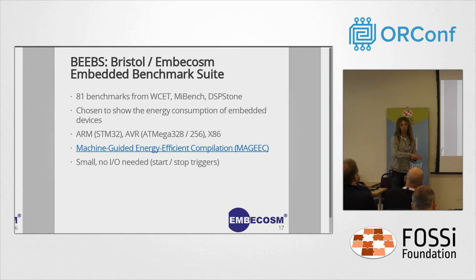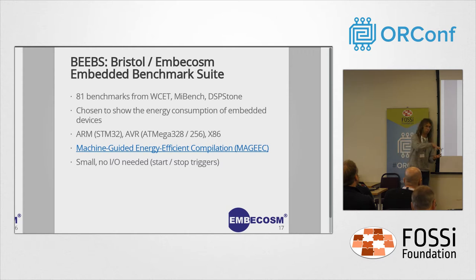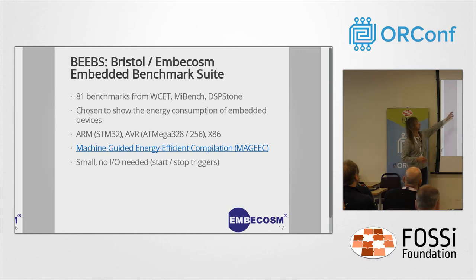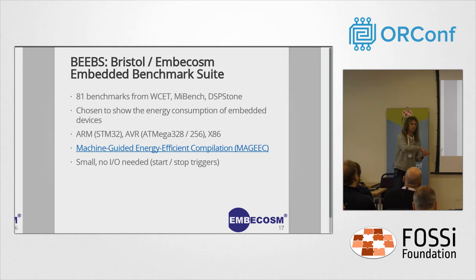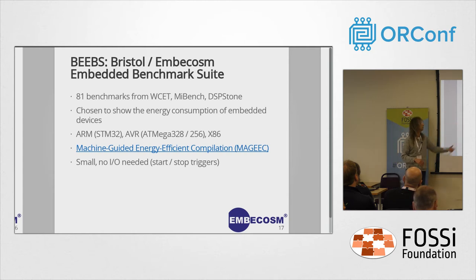Having convinced ourselves that both cores work correctly as far as we can determine, we wanted to look at the performance of the cores. A good way to do that is to use BEEBS — the Bristol and EmbiCosm Embedded Benchmark Suite — which is a set of 81 benchmarks. They've been selected from the WCET suite, MiBench, and the SP Stone suite. The original point of those benchmarks was to show the energy consumption of embedded devices, and the suite was developed as part of the machine-guided energy-efficient compilation project.